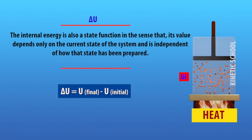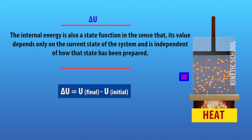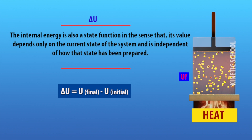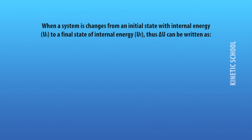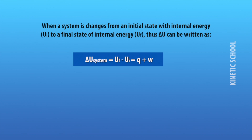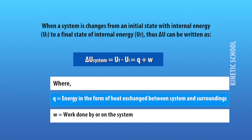The change in internal energy equals the final value of internal energy minus the initial value of internal energy: ΔU = U_f − U_i, or equivalently ΔU = q + w, where q denotes energy in the form of heat exchanged between system and surroundings, and w denotes work done by or on the system.